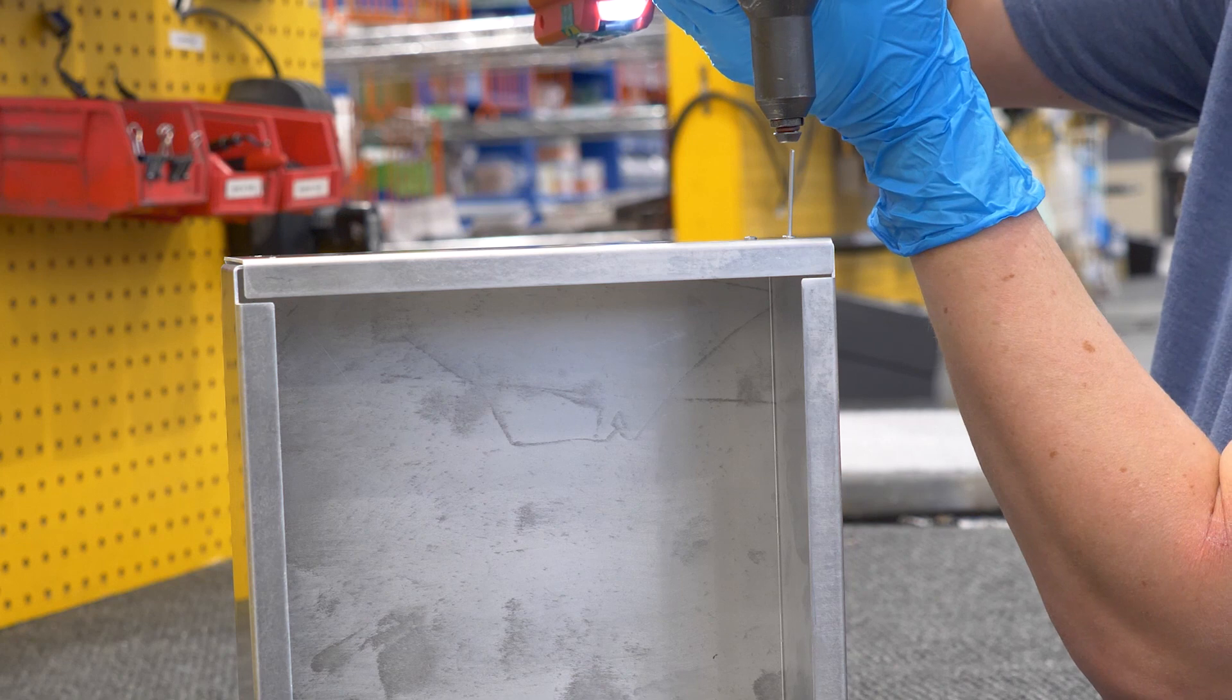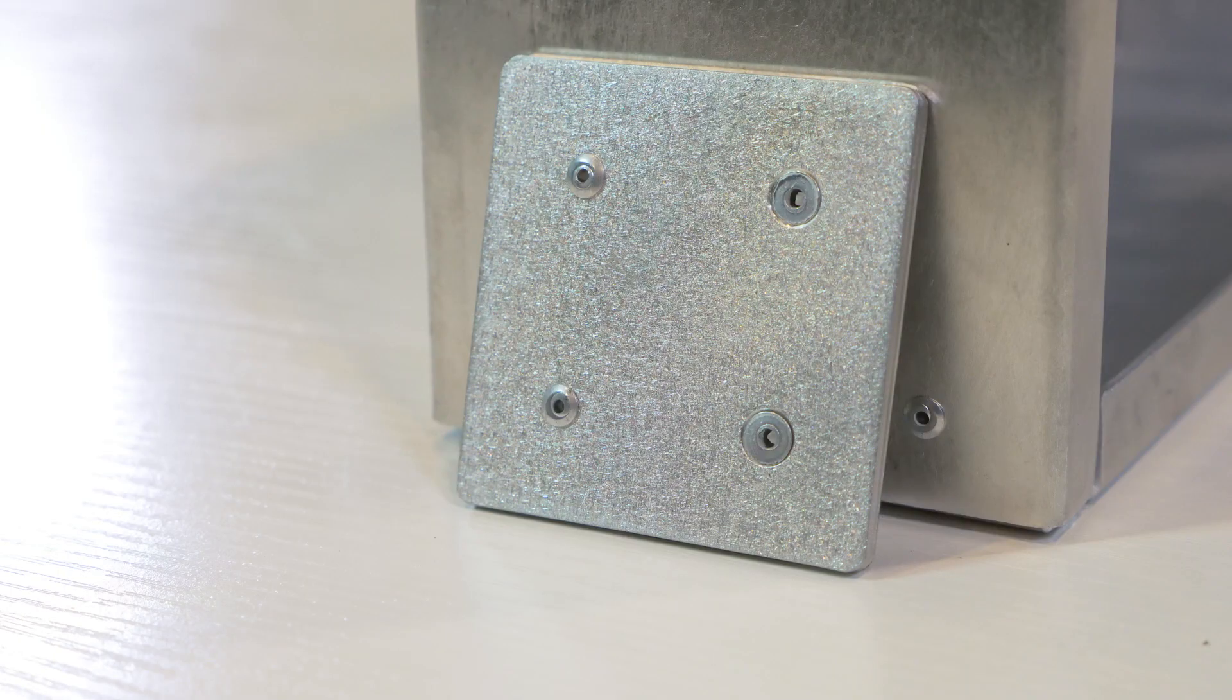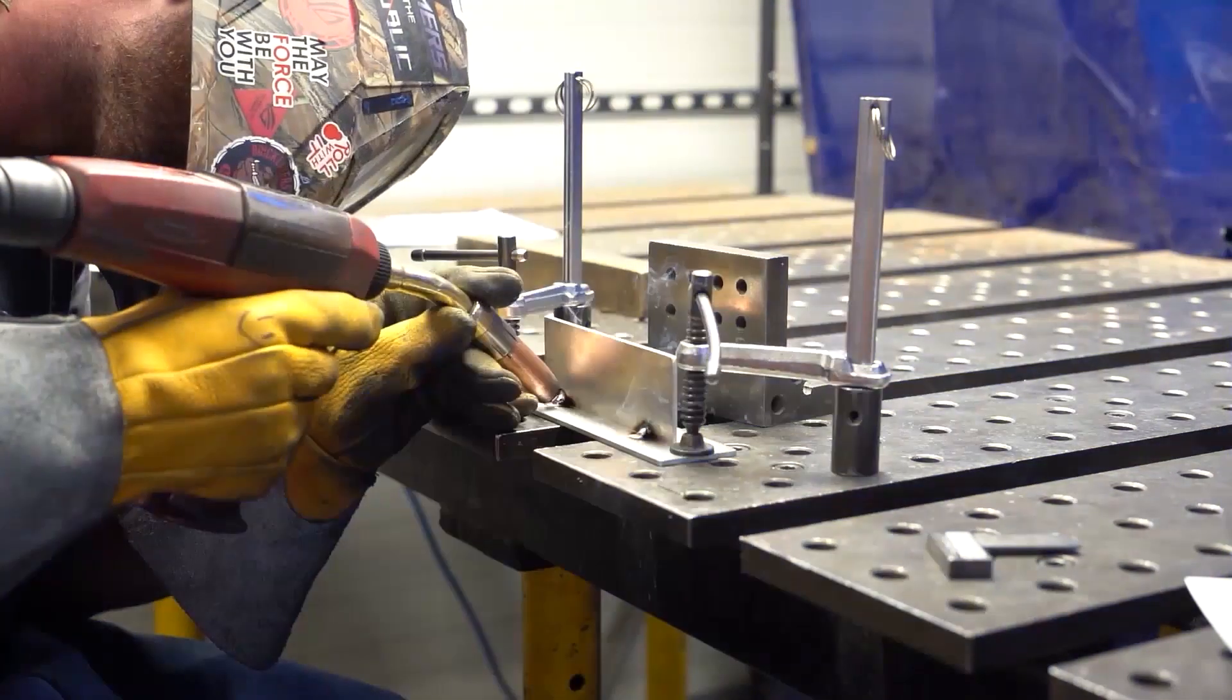Rivets are a much more economical fastening choice than welding because it's faster and simpler. But in terms of being able to withstand high amounts of force, rivets are strong but welding is far more durable.